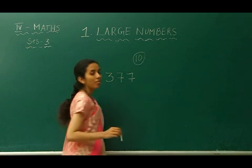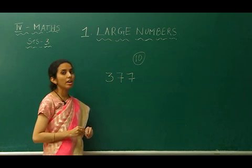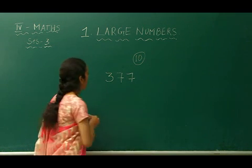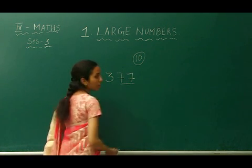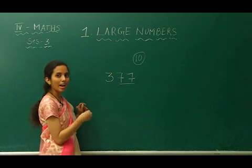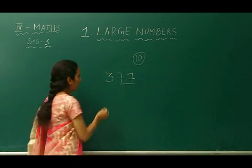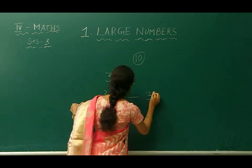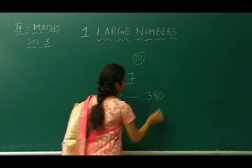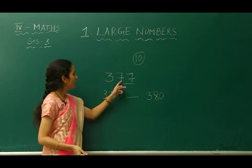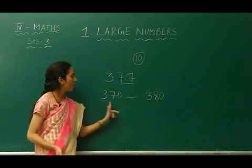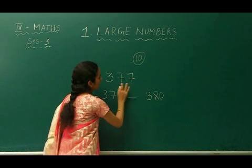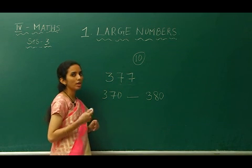Nearest ten — we have discussed this in the last class. If we want to round up to the nearest ten, we have to see the tens place and ones place numbers. First of all, write the lower limit and upper limit: 370 and 380. This number lies in between 370 and 380. Observe the next number — that is the number in the ones place.